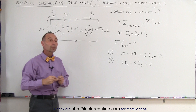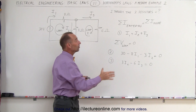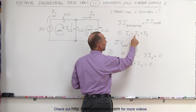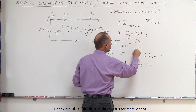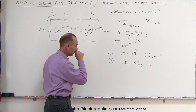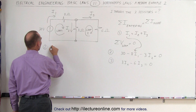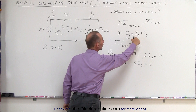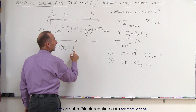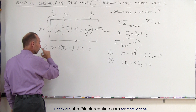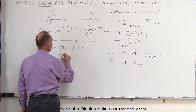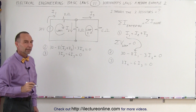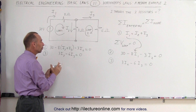We now have three equations — 1, 2, and 3 — obtained using both laws of Kirchhoff, and we need to solve them simultaneously. The best way is to take the current equation, already expressed as one current in terms of the other two, and substitute it into the other equations. We only need to substitute into equation 2, since equation 3 does not include I1. Equation 2 becomes: 30 minus 8 times (I2 plus I3) minus 3I2 equals 0. Equation 3 remains: 3I2 minus 6I3 equals 0.